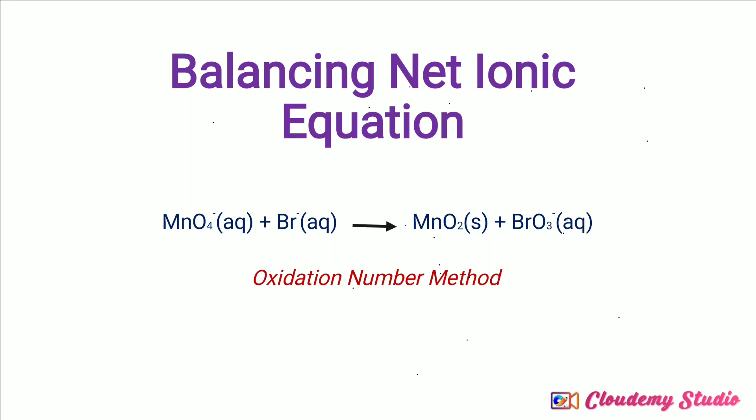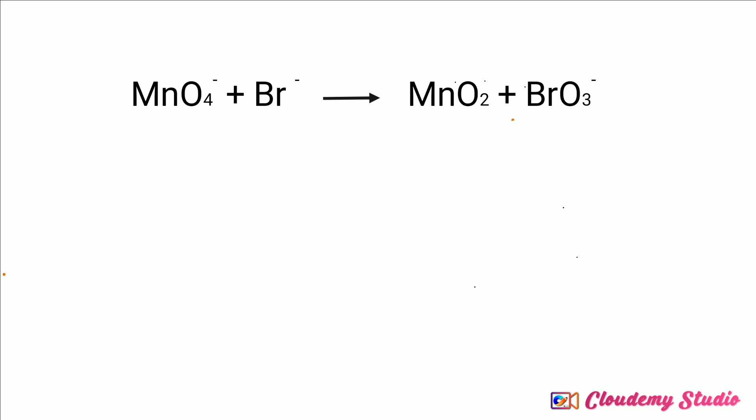Let's balance the net ionic equation. The given equation is: permanganate ion reacts with bromide ion to form manganese dioxide and bromate ion. Let's balance this equation by the oxidation number method.